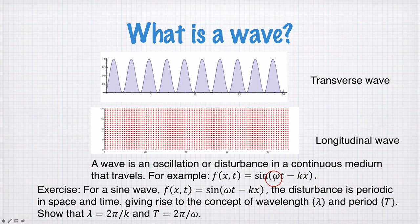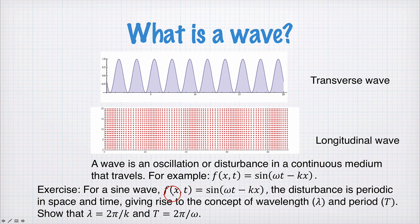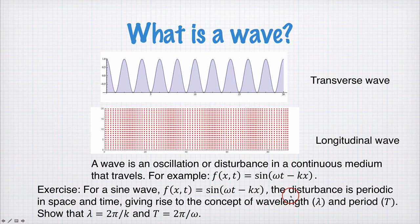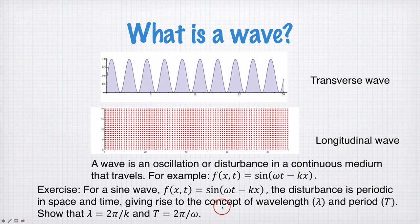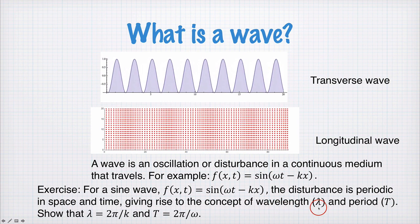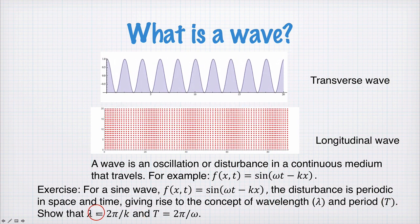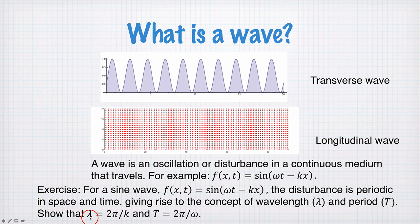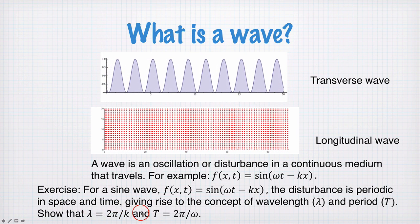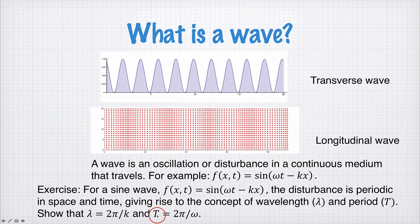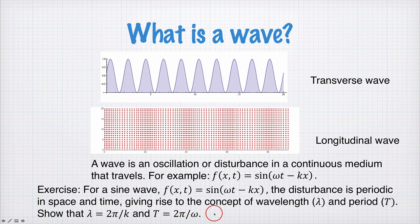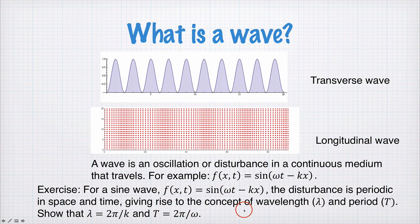In the case that you do have a sinusoidal wave, then you can say the disturbance is periodic in space and time, giving rise to this concept of wavelength λ and period T. And as an exercise you can show that the wavelength λ is given by 2π divided by k, this is k up here, and the period of the wave is 2π divided by ω, where ω is the angular frequency of the wave.